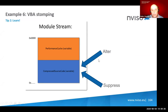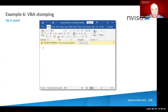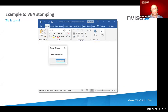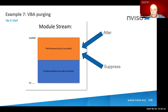In a VBA-stomped document, you either alter or suppress the compressed source code. As you can see, the size is way lower and if you look at the source code you just see the module name — not the message box code. But if you open and enable content, it will still execute. There is a condition: the compiled code is version-dependent and architecture-dependent, so you need to target the right version of Office and Windows. If you target the wrong architecture, the compressed source code will be decompressed and recompiled instead.